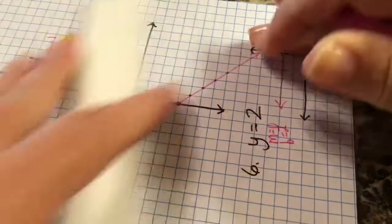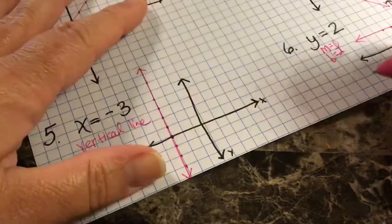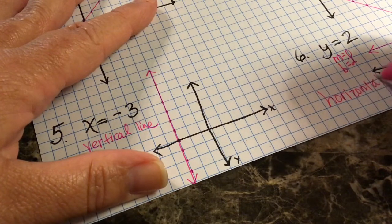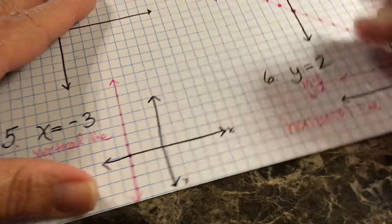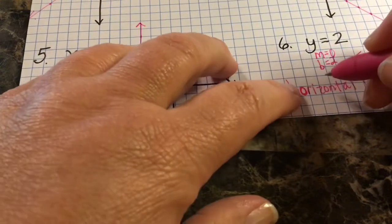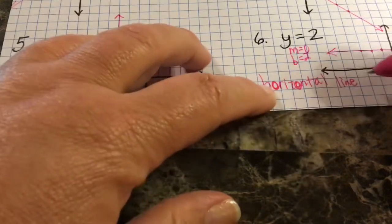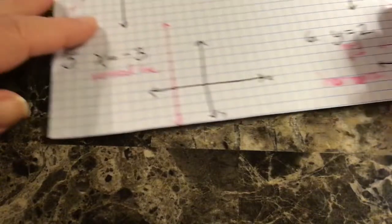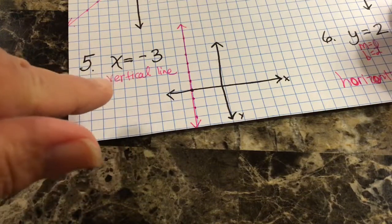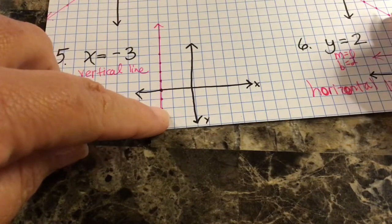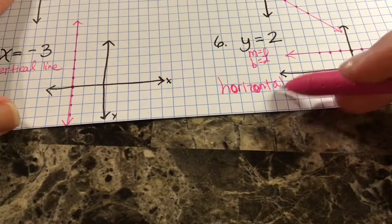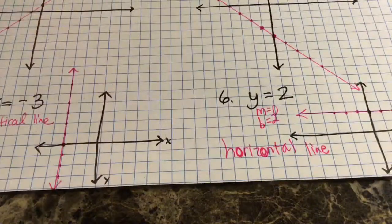Here's how I remember that a horizontal line has a slope of zero: look at the letter H in 'horizontal' — that O looks like a zero, so a horizontal line has a slope of zero. And thankfully, 'vertical' has no O in it, so a vertical line does not have a slope of zero — it's undefined.